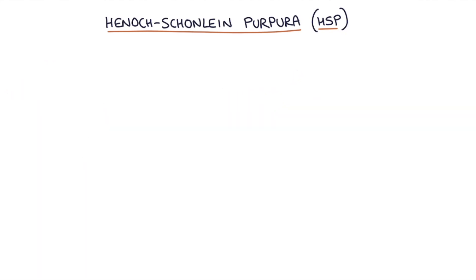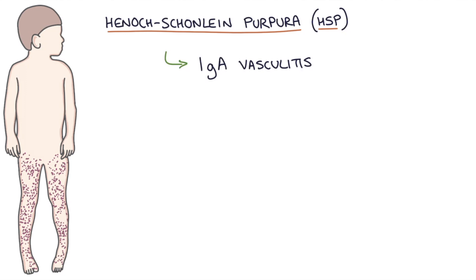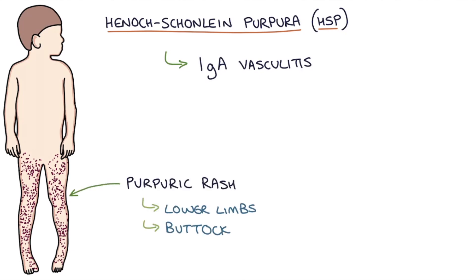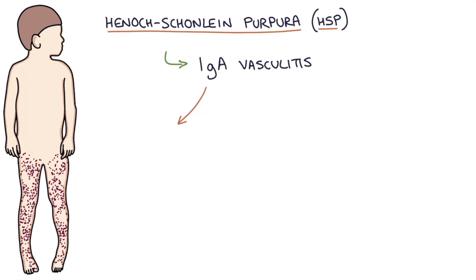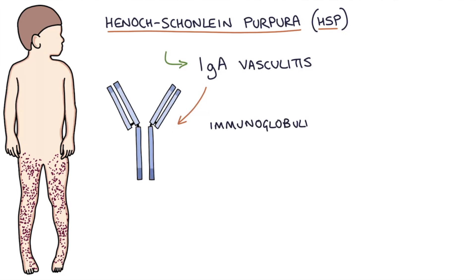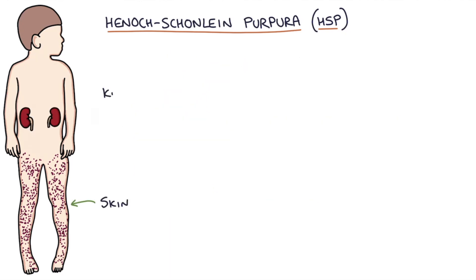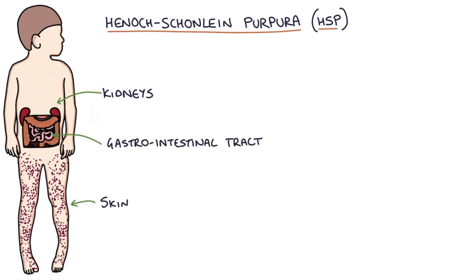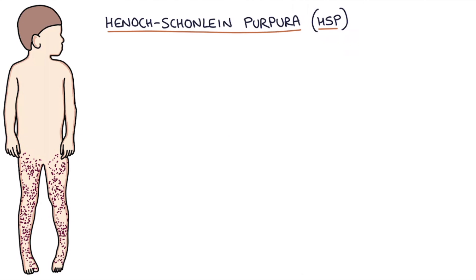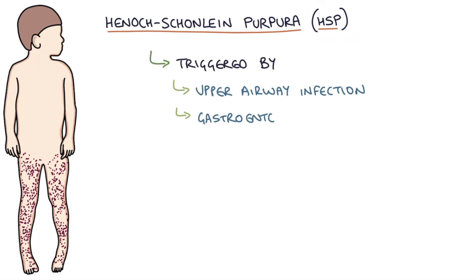Henoch-Schönlein Purpura or HSP is an IgA vasculitis that presents with a purpuric rash affecting the lower limbs and buttocks in children. Inflammation occurs in the affected organs due to IgA (immunoglobulin A) deposits in the blood vessels, affecting the skin, kidneys, and gastrointestinal tract. The condition is often triggered by an upper airway infection or gastroenteritis, and is most common in children under the age of 10 years.